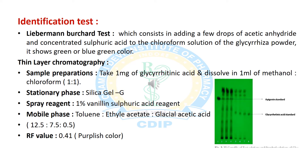Now we will discuss the analysis method, which is thin layer chromatography. We prepare a sample solution by taking 1 mg of glycyrrhizinic acid dissolved in 1 ml of methanol and chloroform solution in a 1:1 ratio. The stationary phase is silica gel, and the spray reagent is 1% vanillin-sulfuric acid reagent. The mobile phase is prepared with toluene, ethyl acetate, and glacial acetic acid in a 12.5:7.5:0.5 ratio. We get a purplish color spot on TLC with an Rf value of 0.41 for glycyrrhizinic acid.